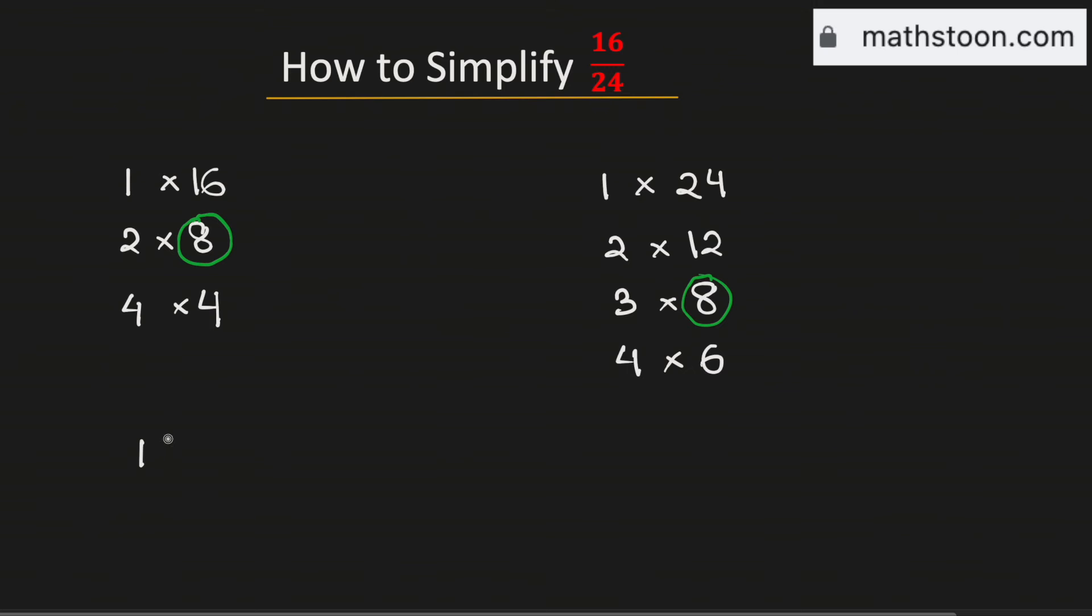So, to simplify the fraction 16 divided by 24, we will divide both the numerator and the denominator by the greatest common factor.